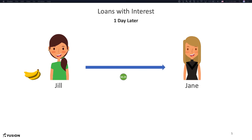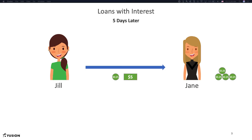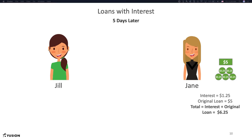After day one, Jill pays Jane 25 cents. This process continues for day two, day three, day four, and finally on day five, Jill pays 25 cents interest plus the original loan amount of five dollars. At the end, Jane has been paid six dollars twenty-five cents for lending Jill five dollars for five days. This series of cash flow exchanges represents a fixed coupon with fixed maturity date bond. The interest is twenty-five cents per day and the maturity is five days.